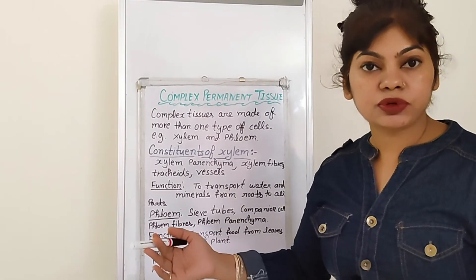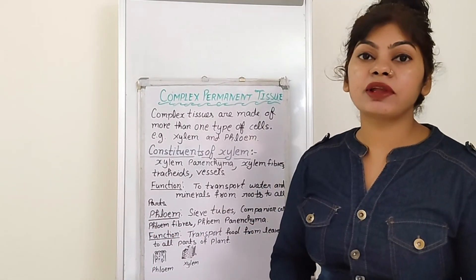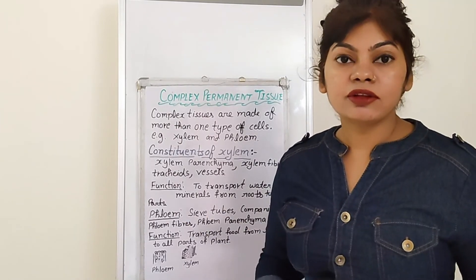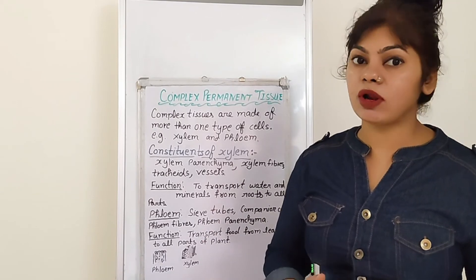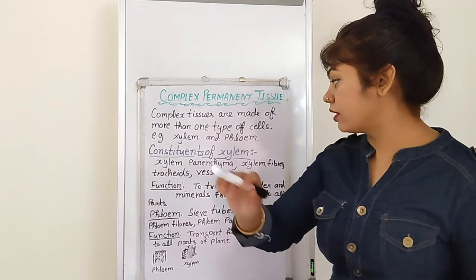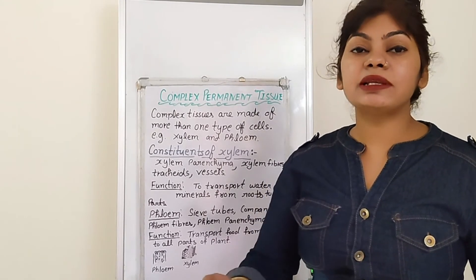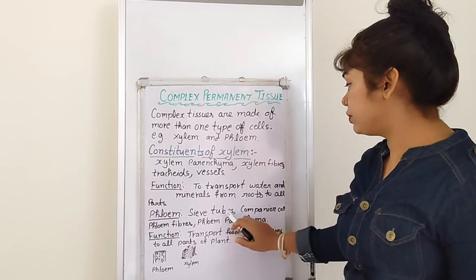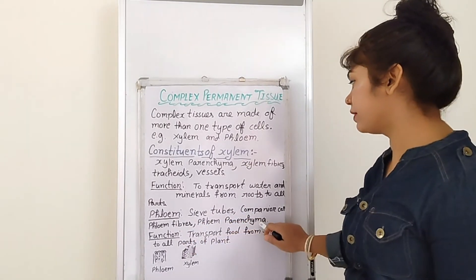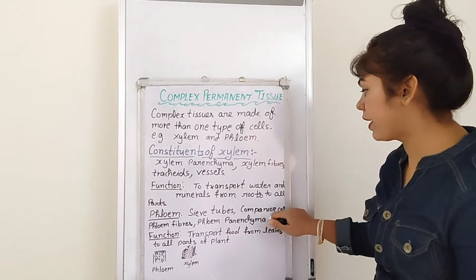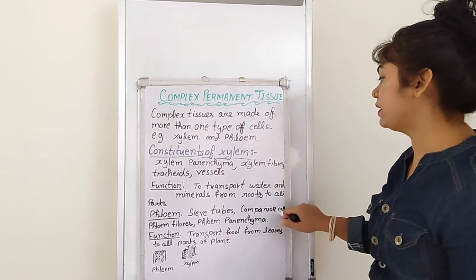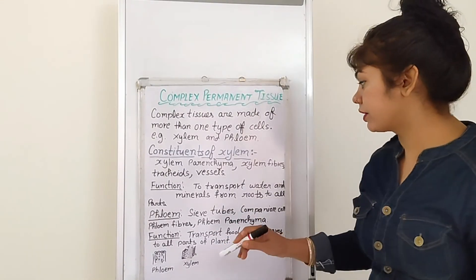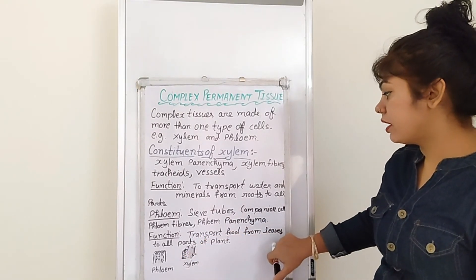Phloem transports food from leaves to all parts of the plant. The constituents of phloem are: sieve tubes, companion cells, phloem fiber, and phloem parenchyma. The main transport cells are sieve tubes and companion cells, while phloem fiber and phloem parenchyma provide support.